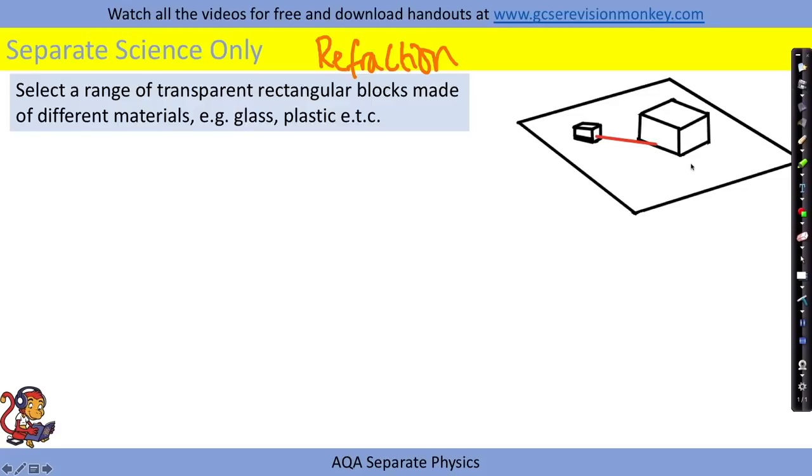We will select a range of transparent rectangular blocks made of different materials, for example different plastics and different types of glass.